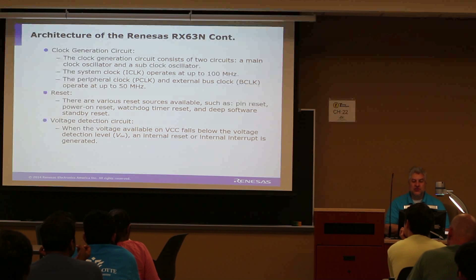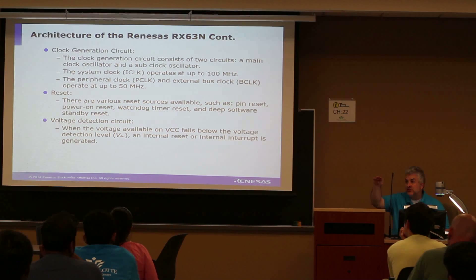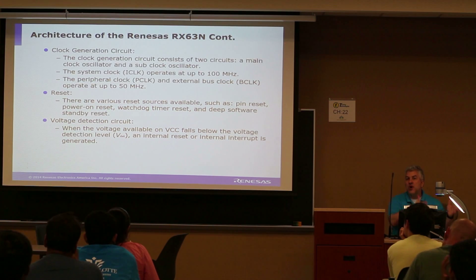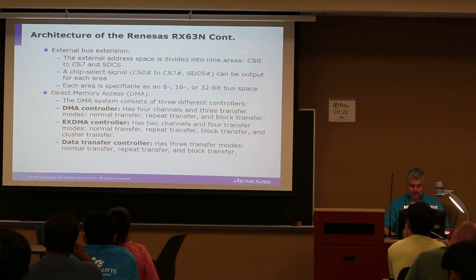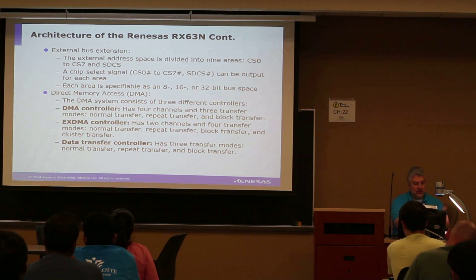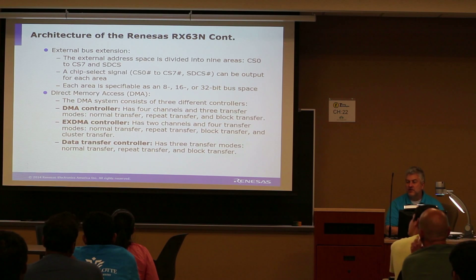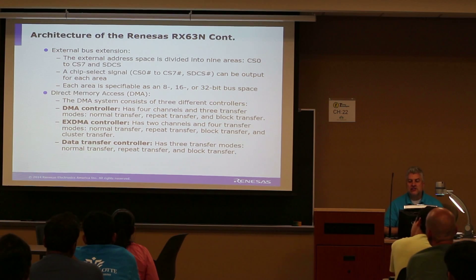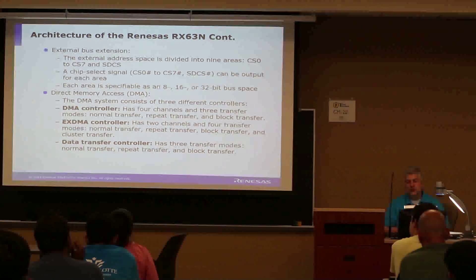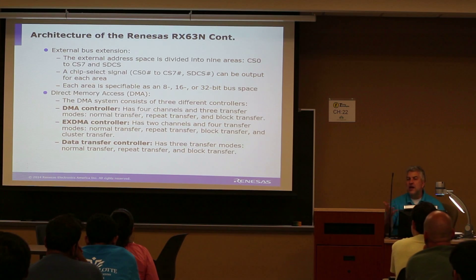We also have reset and voltage detection. There's a point in our microcontroller where if the voltage gets too low, it'll start turning off devices inside so it can try to save what's stored in RAM for as long as possible. There is an external bus extension, allowing you to access all sorts of different peripheral devices — 8, 16, or 32-bit devices — and bring that data in.